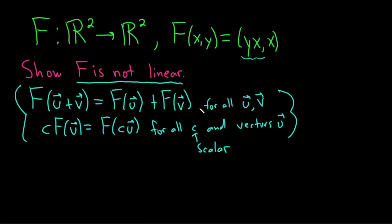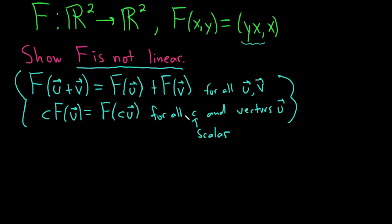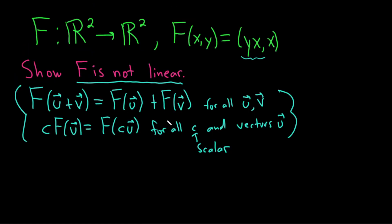So in this case, we have this right here, this y times x. And that, to me, just looks a little bit sketchy, like something is going on there. I don't think that's going to be linear. You have multiplication. So we need to come up with just two vectors, u and v, that we can use to violate this condition.